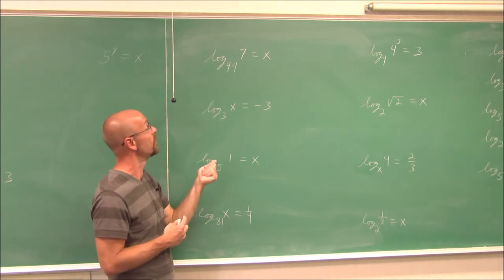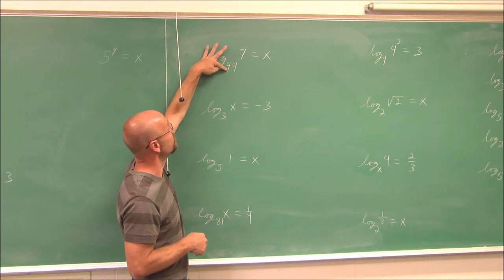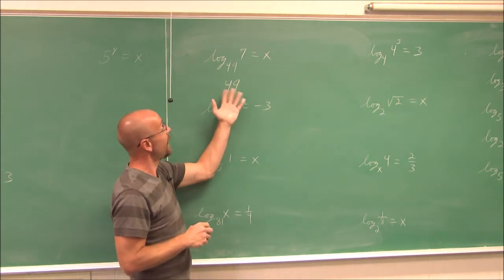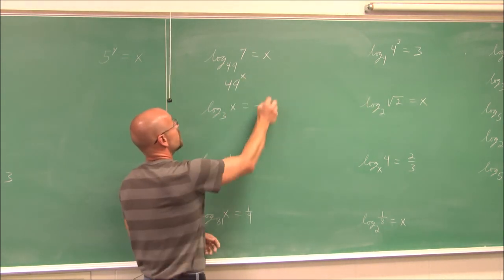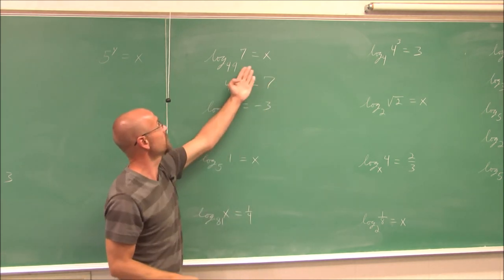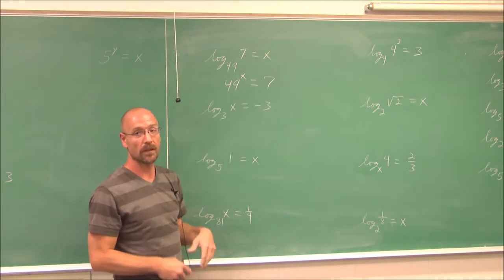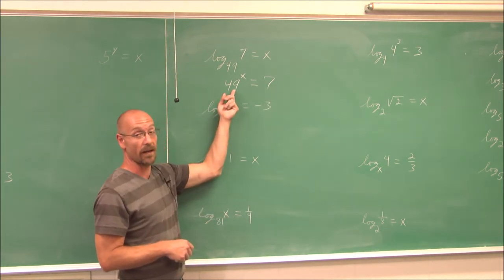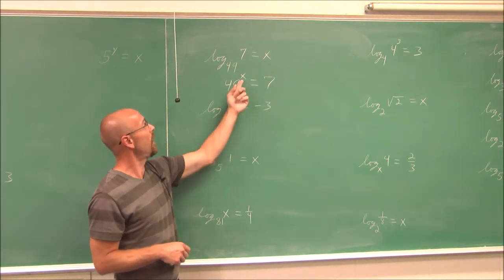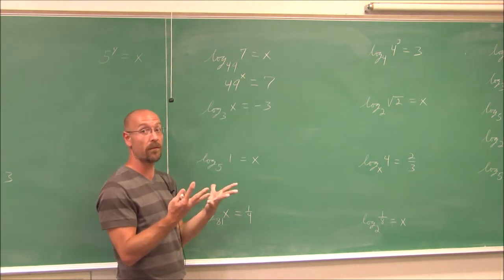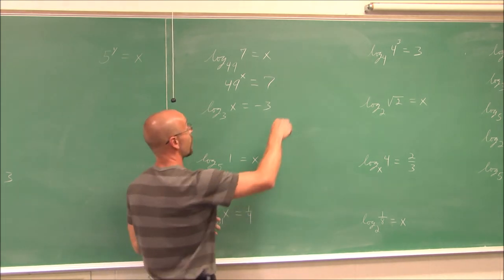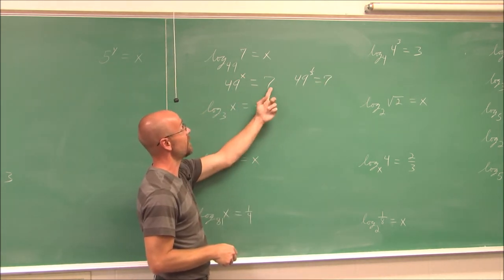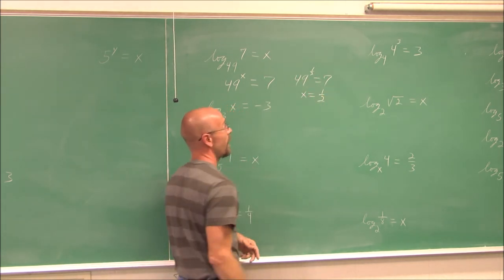Let's solve by rewriting in exponential form. Here: log base 49 of 7 equals x. The base is 49, logarithms equal powers, so I write 49 to the x equals 7. I know the square root of 49 is 7, and a square root corresponds to a rational exponent of 1/2. So 49 to the 1/2 equals 7, meaning x equals 1/2.